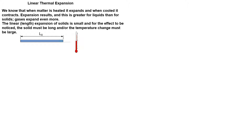When the metal rod is heated, atoms vibrate more and push neighboring atoms. This neighbor-to-neighbor push results in a slightly longer distance on average between neighbors, producing a larger size for the whole metal rod. The higher the temperature, the higher the vibration.